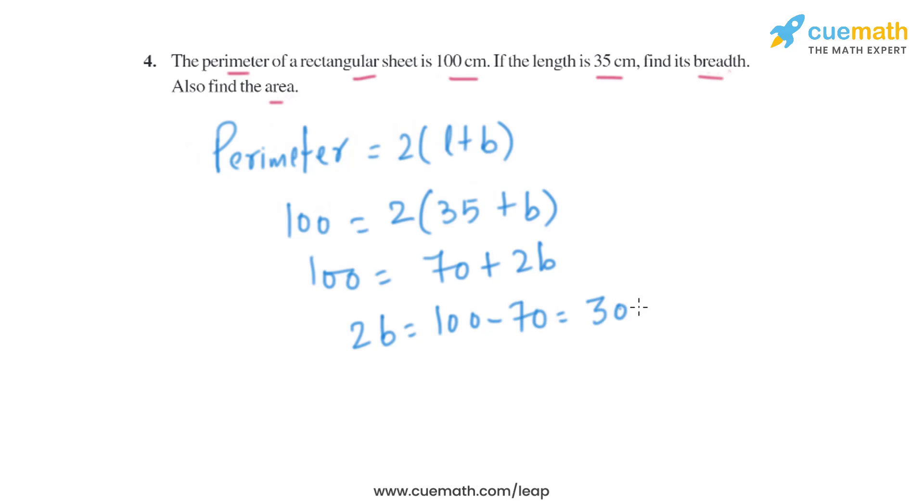Which is same as 30 centimeter. So we can find the value of B from there, that is 30 by 2 centimeter, which is same as 15 centimeter. So that will be the breadth of the rectangular sheet.